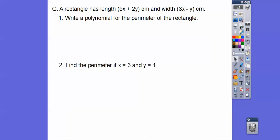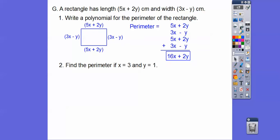So a rectangle has length 5x plus 2y centimeters and width 3x minus y centimeters. Write a polynomial for the perimeter of the rectangle. So here's our rectangle. We're going to add all those up for perimeter. And there's our answer right there. And then find the perimeter. When we plug in x equals 3 and y equals 1, we get 50. And then answer the question. The perimeter is 50 centimeters. If you just wrote 50, you're going to get docked at some points. Always answer these word problems in the context. So the perimeter is 50 centimeters.